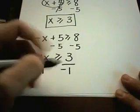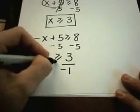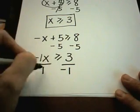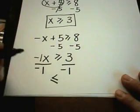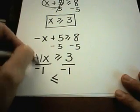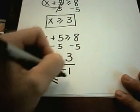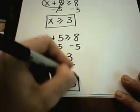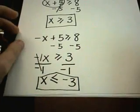If you multiply or divide by a negative number, the inequality is going to flip signs. So instead of being greater than or equal to, it's going to turn into less than or equal to. The negatives cancel, and I've got x ≤ -3. That's going to be my solution.